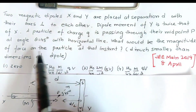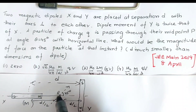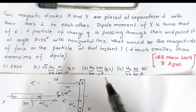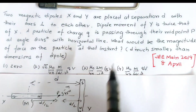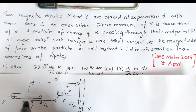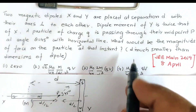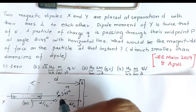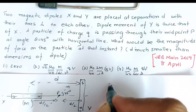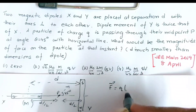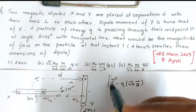What would be the magnitude of force on the particle at that instant — meaning at the instant the particle crosses this midpoint? Also, D is much smaller than the other dimensions of the dipole. So in this question, we have to find the force on a charged particle moving in a magnetic field, that is the magnetic force, given by F = Q(V × B).